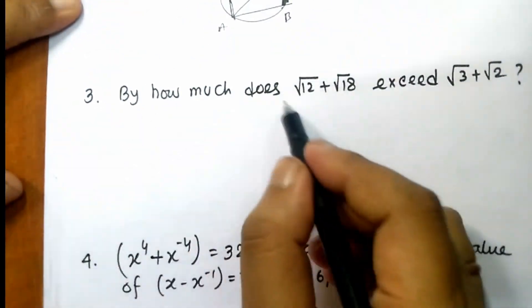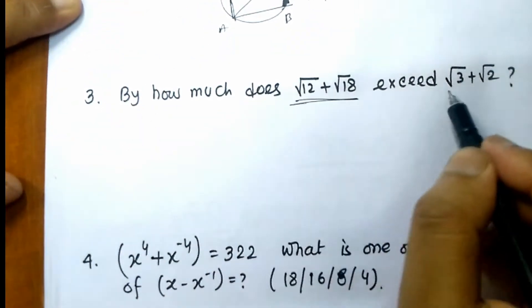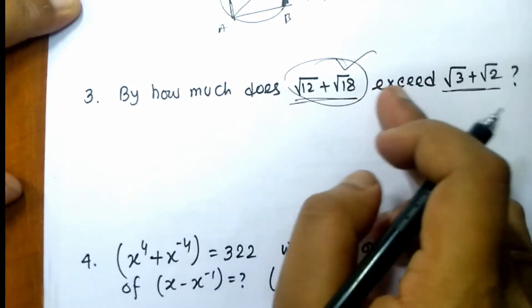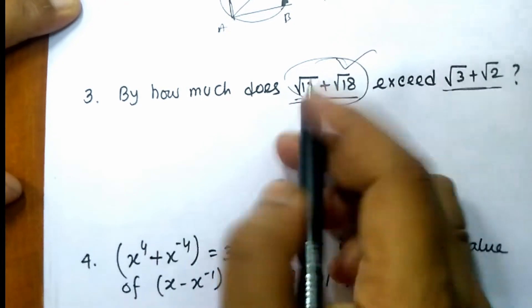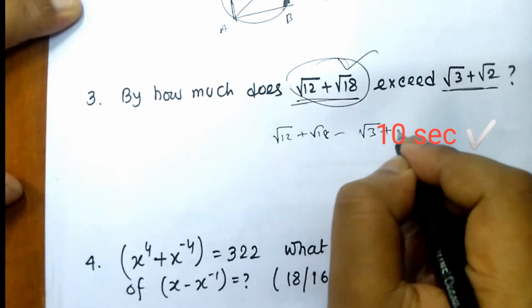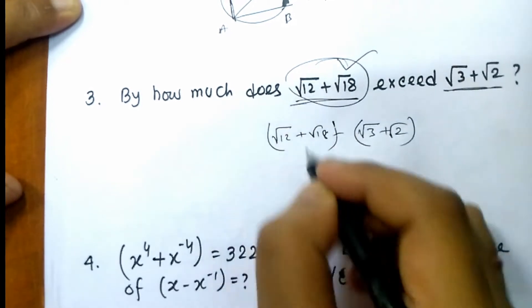By how much does this parameter exceed? This is the greatest part. We have to find the excess, we have to reduce, we have to minus that. Root 12 plus root 18 minus root 3 plus root 2.